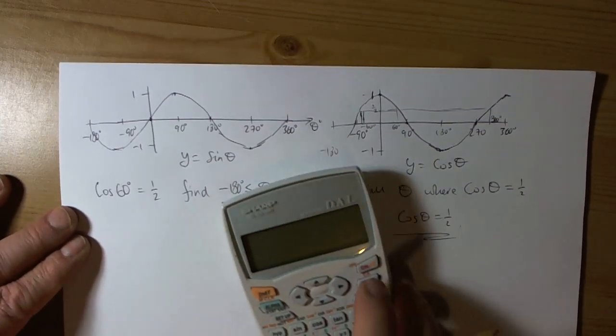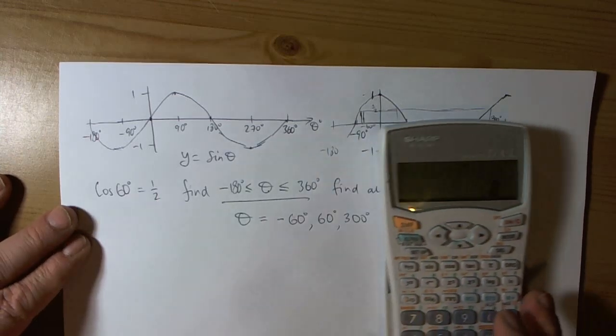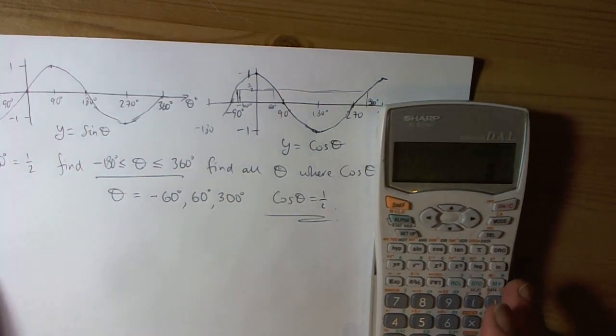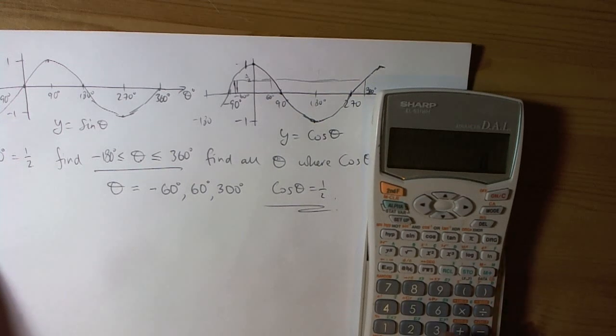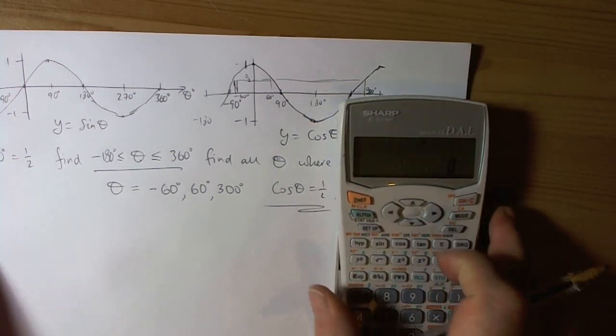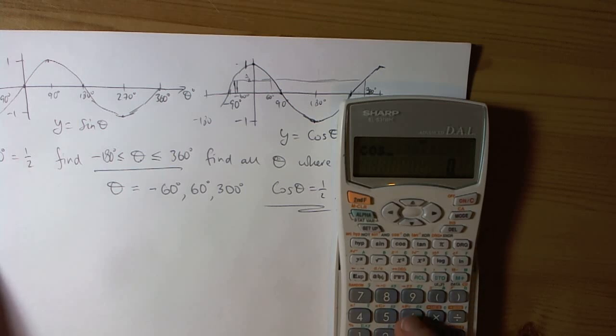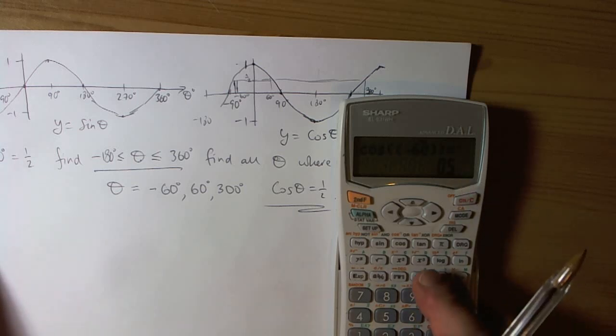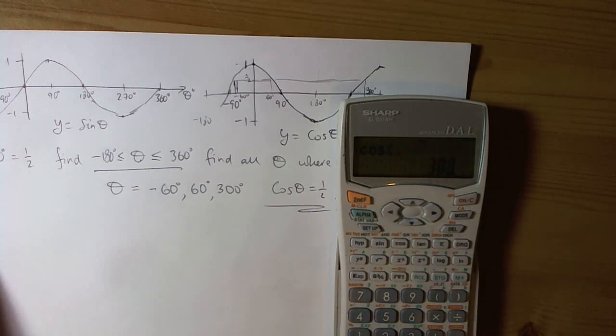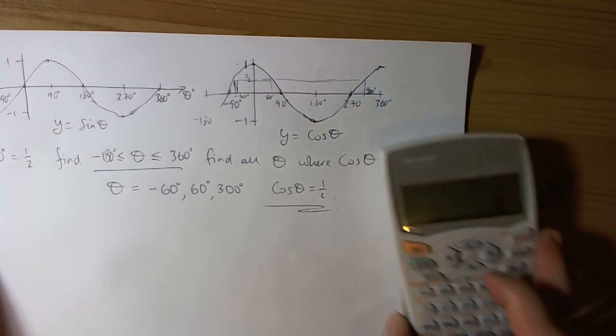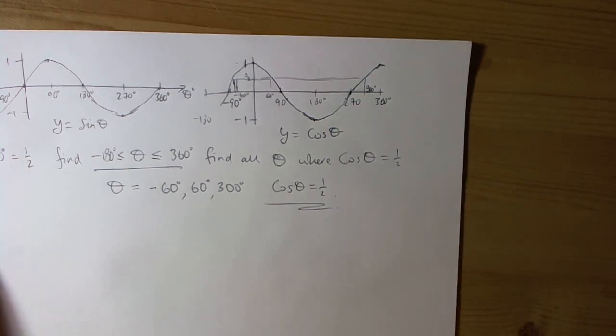This will be a non-calculator paper, but we will check just to make sure that we haven't led you on the garden path for this explanation. So if we make sure we're in degrees mode. If we do the cos of negative 60, yep, one half. If we do the cos of 300, yep, a half. So that explanation should work.